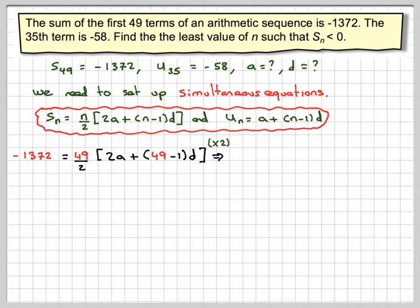Times by 2, we're going to get 49 times 2A plus 48D equals minus 2744. Now 49 actually goes into this number conveniently. So we're going to divide both sides by 49, and 2A plus 48D is equal to minus 56.